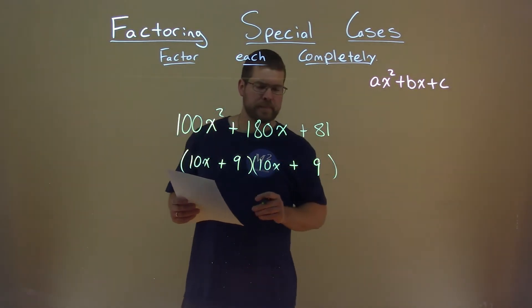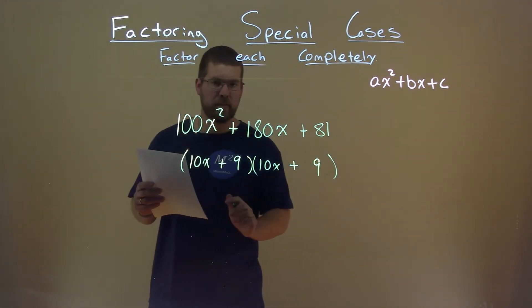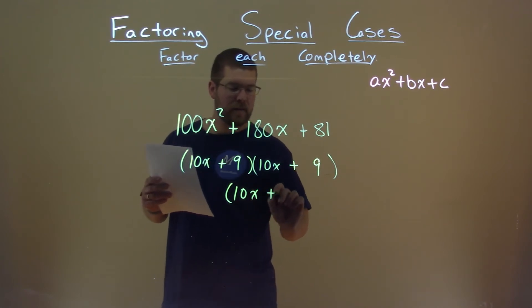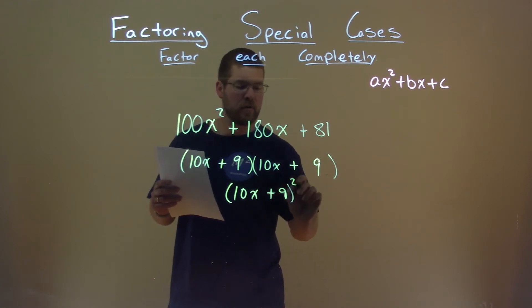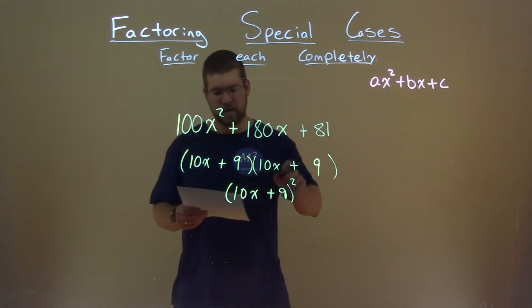But we're not done. This still can be simplified a little more. Notice, both these parentheses are exactly the same. So, when they're multiplied, I can write it as 10x plus 9 all squared. And so that is our final answer now, 10x plus 9 all squared.